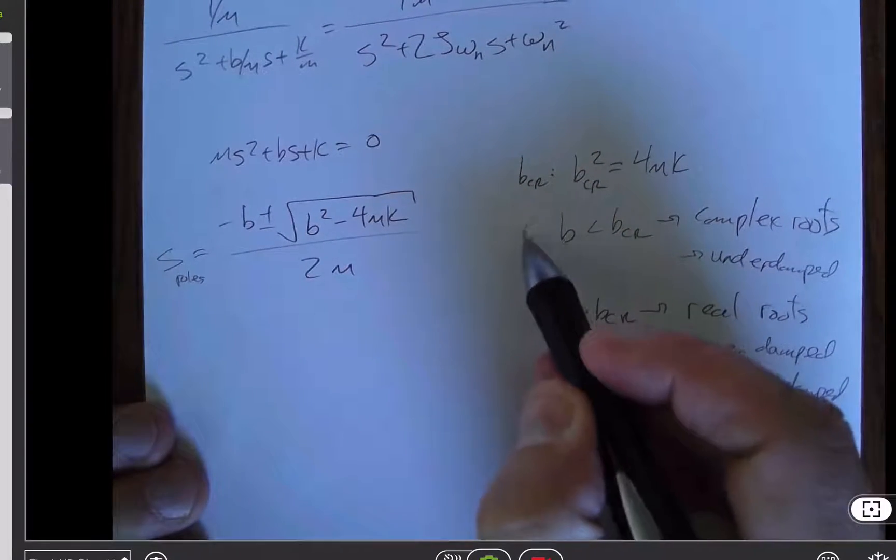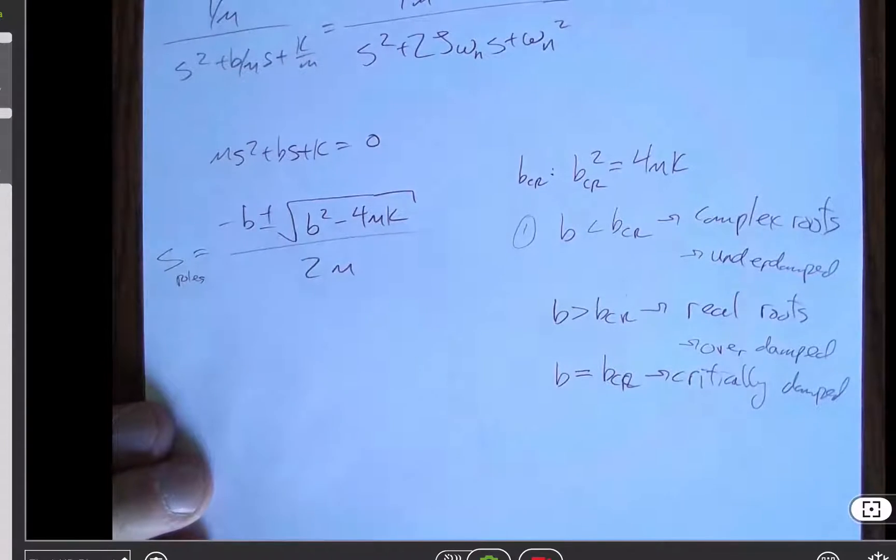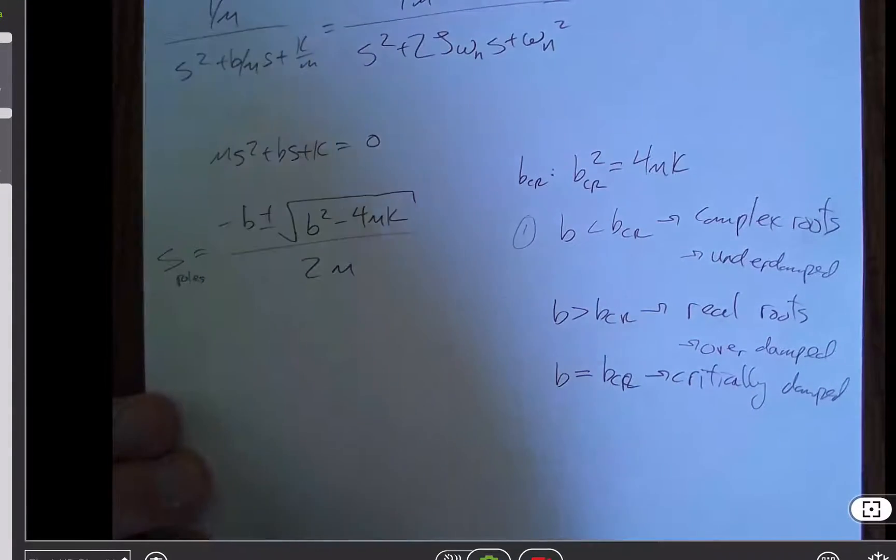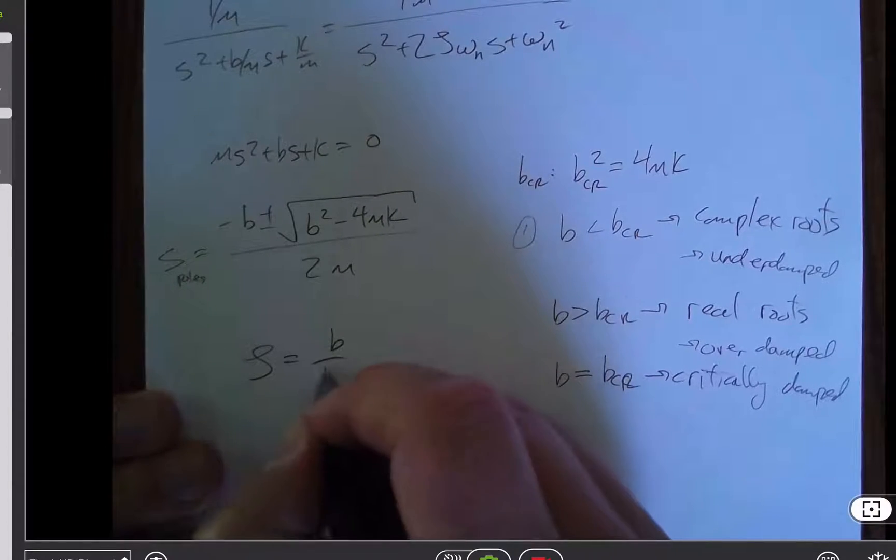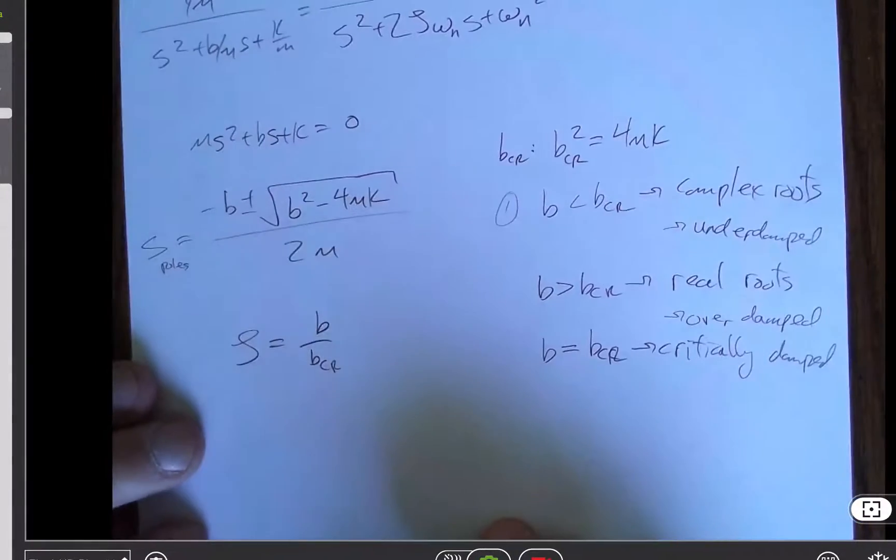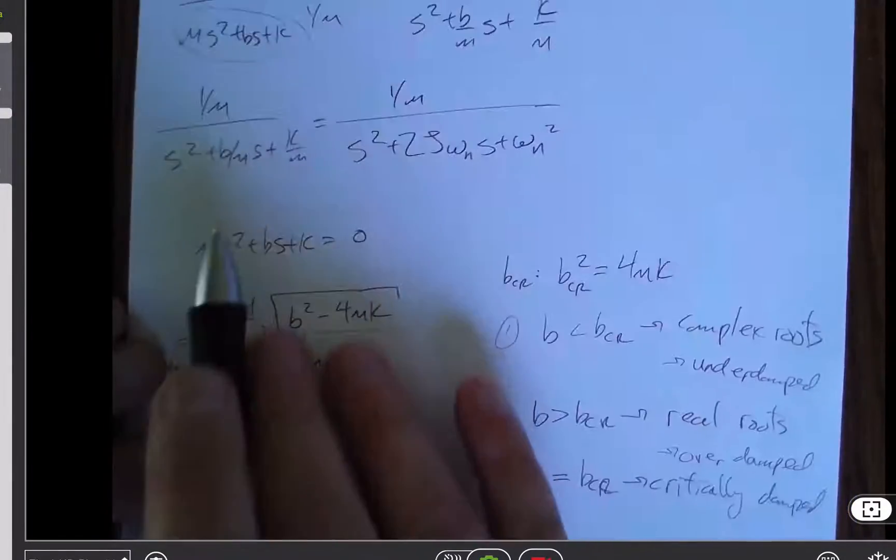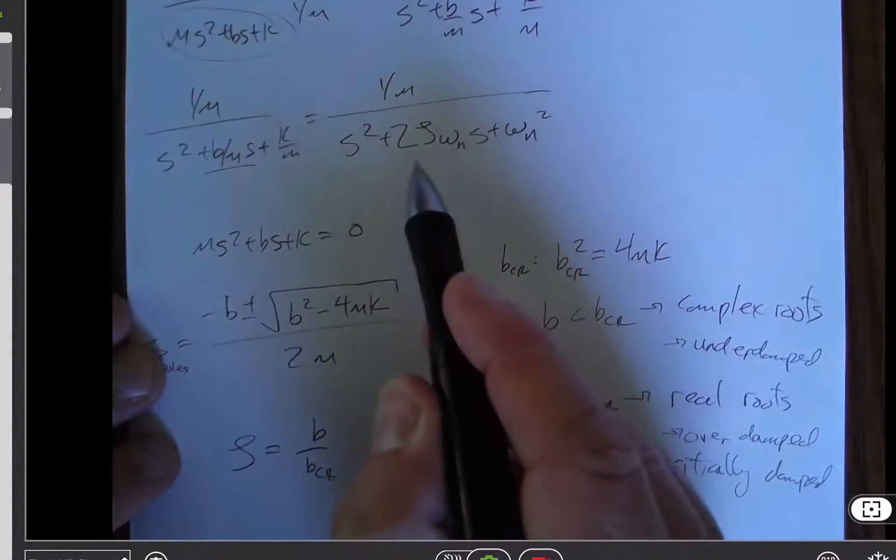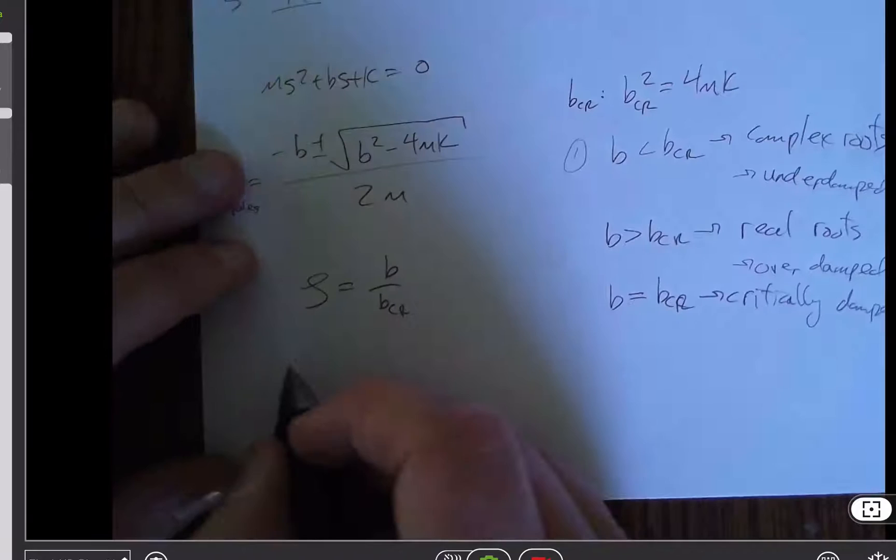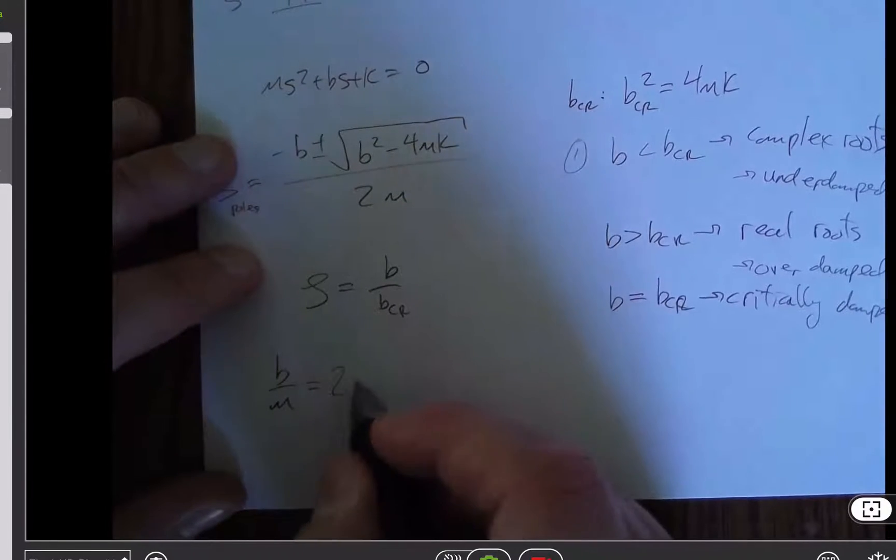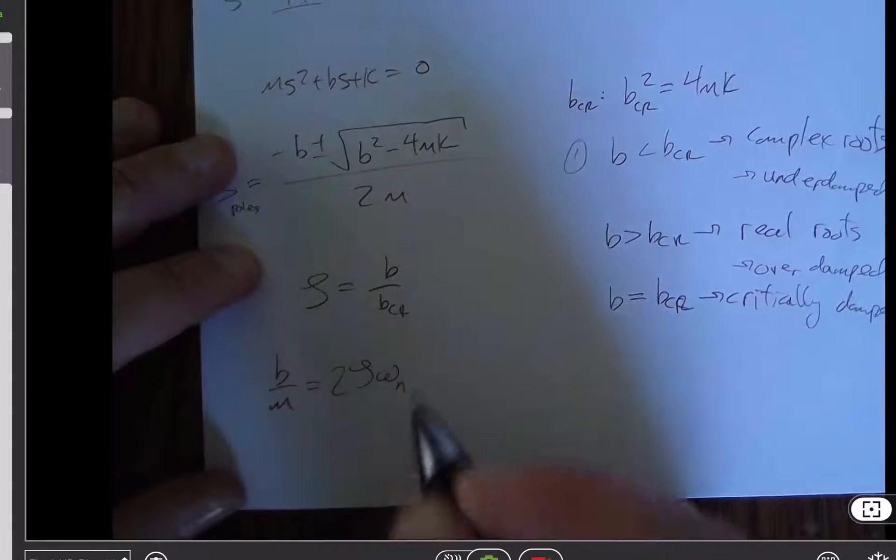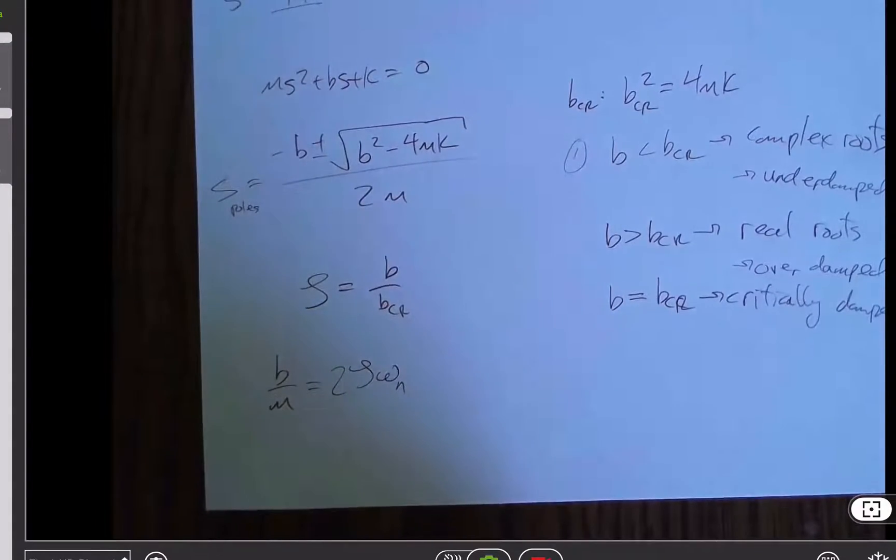But we never know damping so well to say that it is exactly equal to b critical is kind of an irrelevant case. So I'm going to talk about these two main cases. And mainly, we're going to deal with this today. What do we do with complex roots? And so we're going to define a zeta that is the ratio of b to b critical. And so my claim, if you come back up to here, if this is equal to that, then I'm saying that b over m is equal to 2 zeta omega n. How can I make that claim?